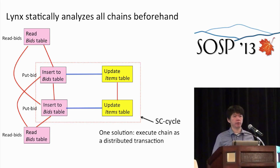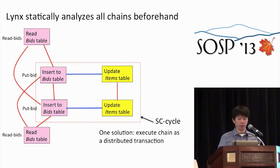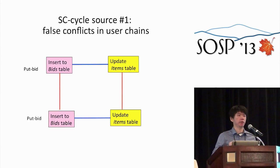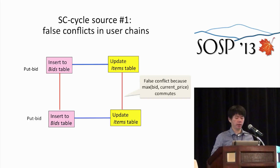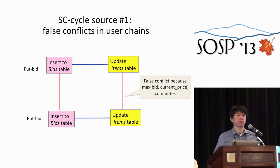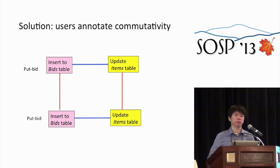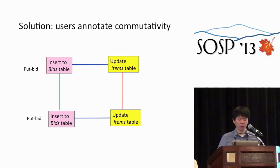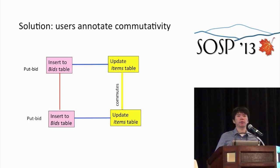We need to think about where SC cycles come from. The first possibility is a false conflict, and the second is a true conflict that must be dealt with. Looking closely at the SC cycle example, the second hop is actually a false conflict: when updating the item table, we use the max function to update the highest bid, and max is a commutative operation. So this conflict on the second hop is not a real problem.